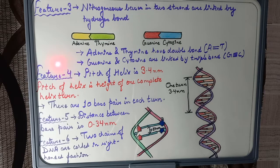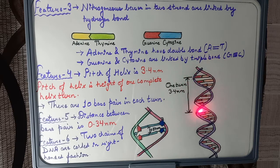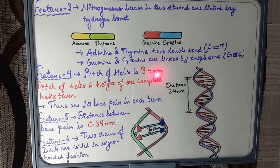Feature 4 states that the pitch of the helix — meaning the height of one complete turn — is 3.4 nanometers. As you can see in the diagram, the helix completes one full turn over this distance. Between this one turn, there are 10 base pairs in the DNA.